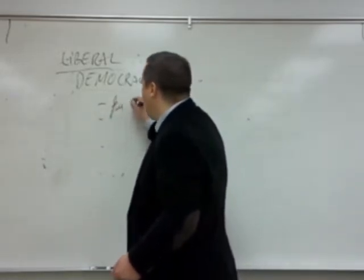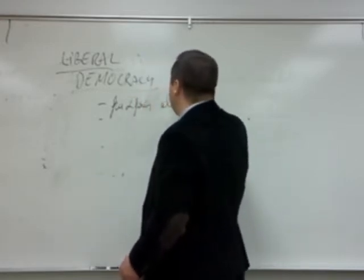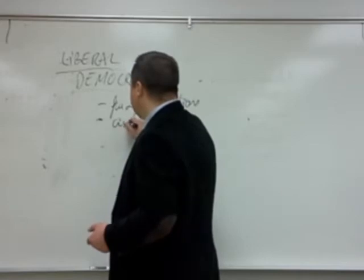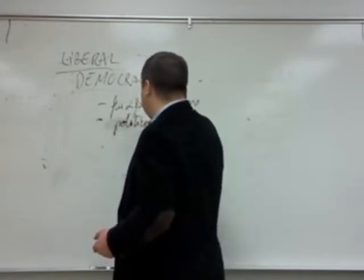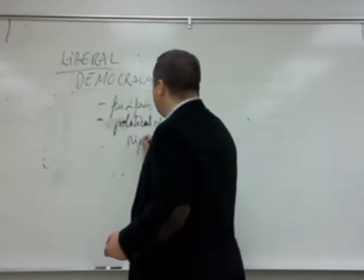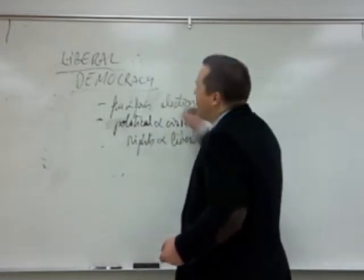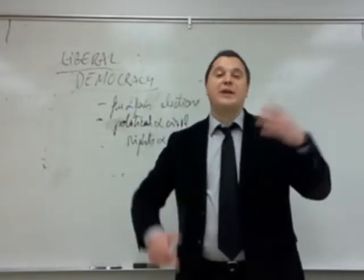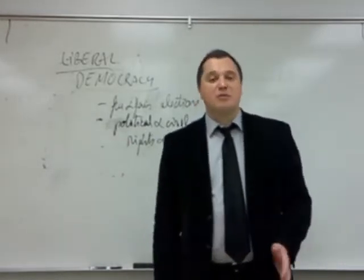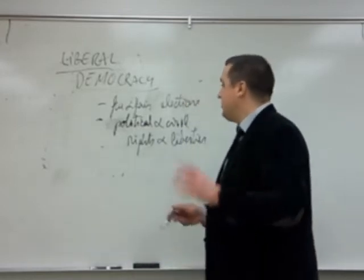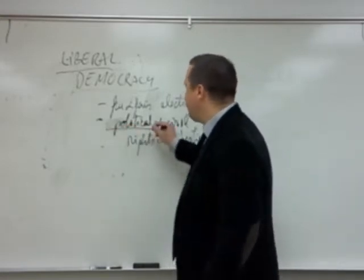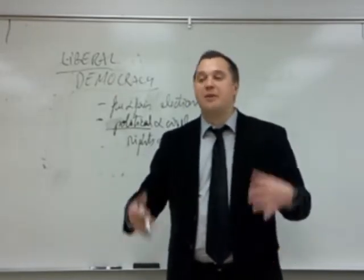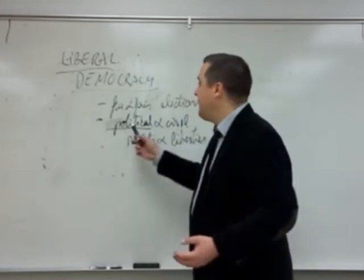Liberal democracy simply means that model of democracy established in the 19th century with the advent of the modern state, with the idea of individual freedoms and rights. It has a few elements. One is free and fair elections — you need electoral democracy to start with, but it's not enough. Another important element is civil and political rights and liberties. This is why it's called liberal democracy — it's based on the ideology of liberalism: freedom of enterprise, free market, social and moral freedom.